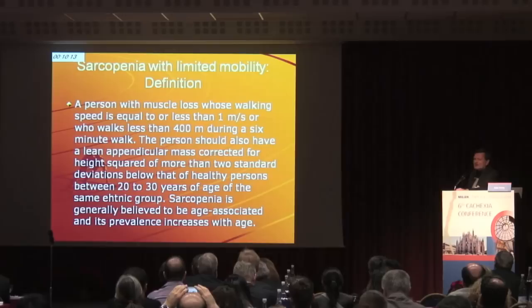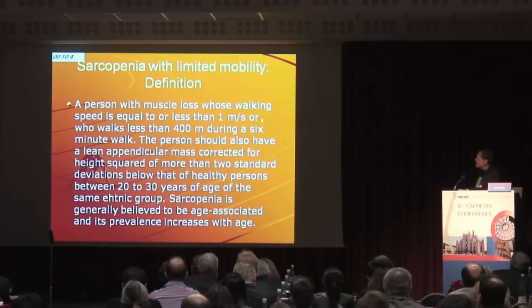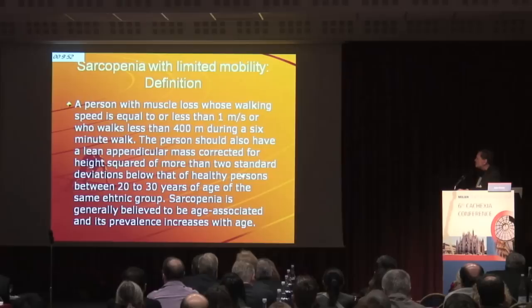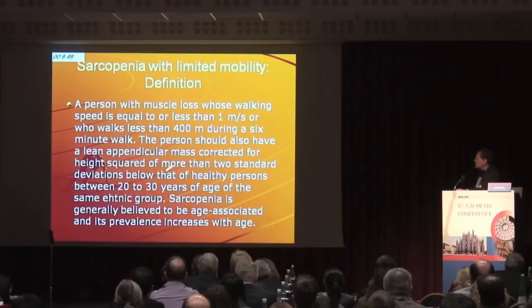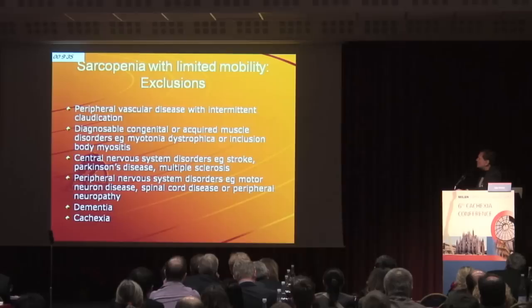Here is the definition. This is published in JAMA — the General Medical Directors Association — so you can get the full paper. A person with muscle loss whose walking speed is equal to or less than one meter per second, or who walks less than 300 meters during a six-minute walk. The person should also have a lean appendicular mass corrected for height squared of more than two standard deviations below that of healthy persons between 20 to 30 years of age of the same ethnic group. Sarcopenia is generally believed to be age-associated and its prevalence increases with age.